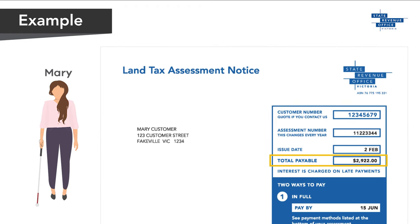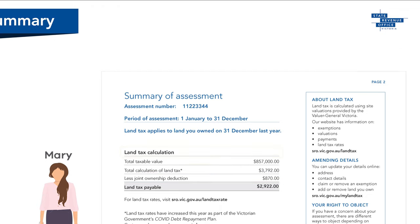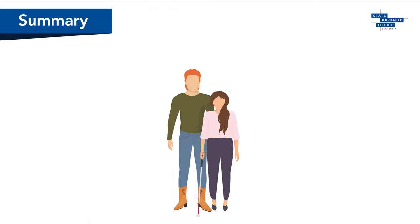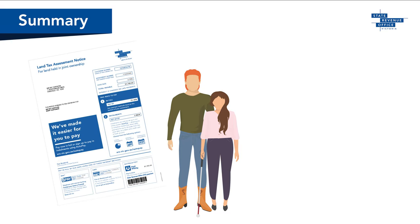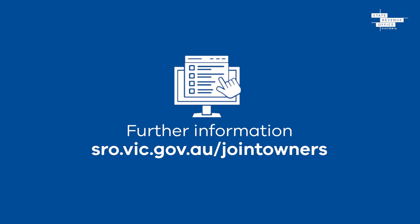The deduction amount can be found on page two of the individual assessment. In summary, if you're a joint owner of land in Victoria, we assess you together with all joint owners, then assess you individually. This means you may receive more than one assessment if you are liable for land tax both jointly and individually. You will receive a joint ownership deduction on your individual assessment. More information about joint ownerships is available at sro.vic.gov.au/joint-owners.